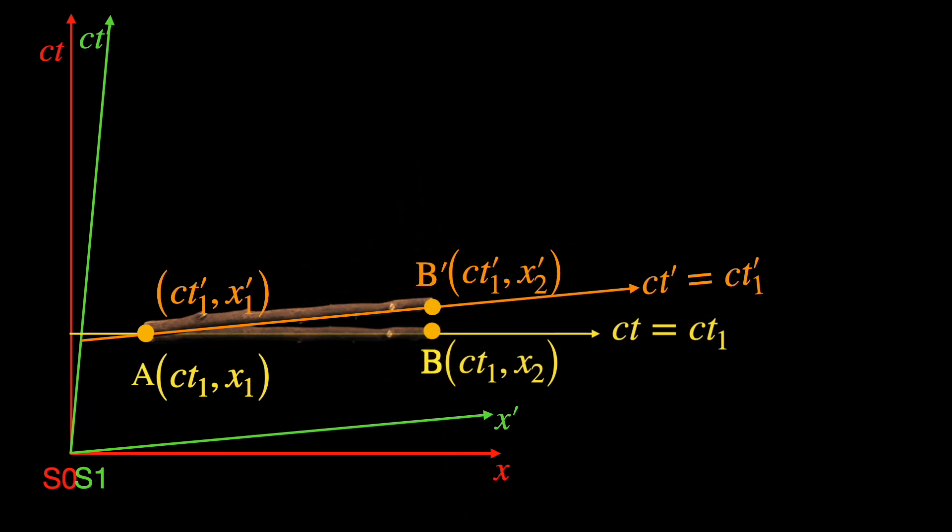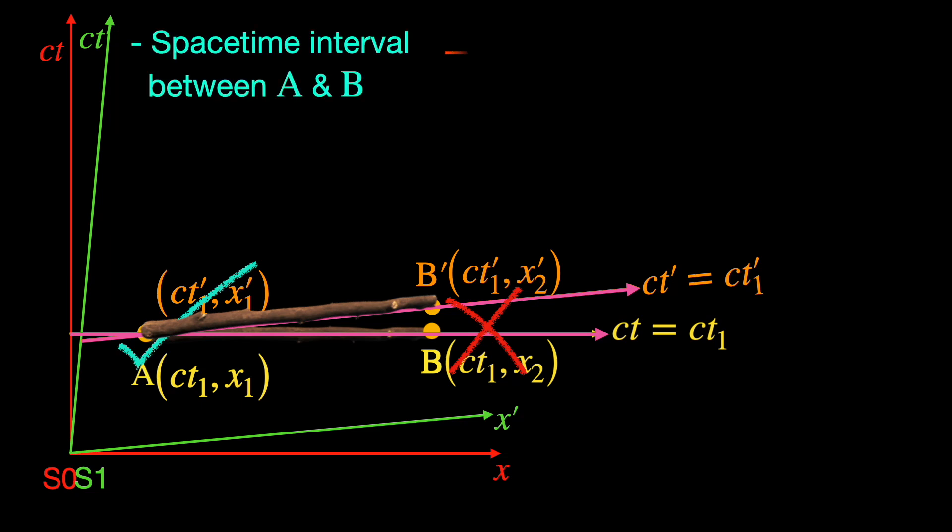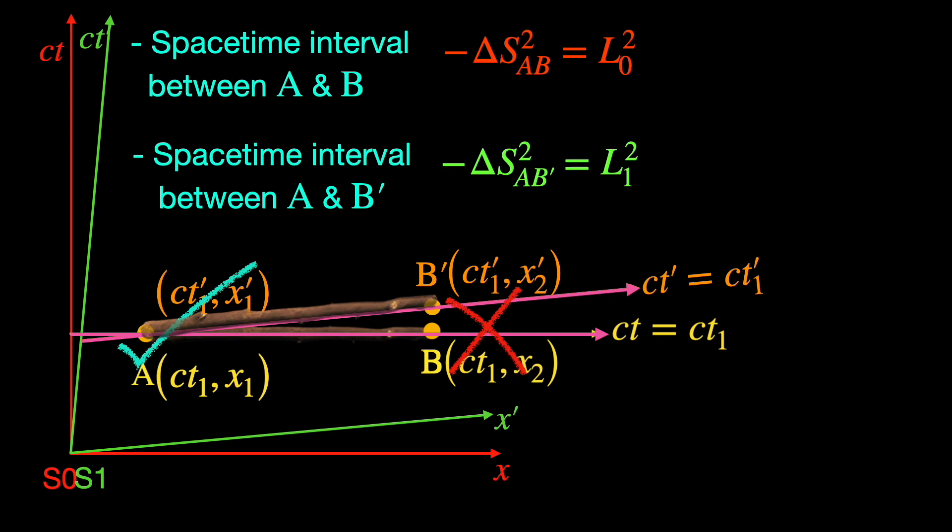Since the sense of simultaneity is frame dependent, when the measurement events of one end of the stick in the two frames coincide those of the other end of the stick won't. In S0 frame we see event B is simultaneous to event A and the stick is along our x axis, whereas in frame S1 the other group of observers see the event B' is simultaneous to event A and the stick is parallel to their x' axis. So essentially to measure length of the same stick the two groups are measuring space-time intervals between different pairs of events and thus they end up getting different results.